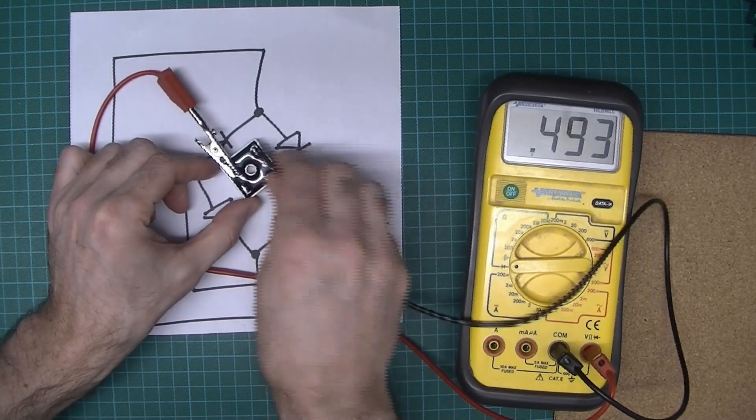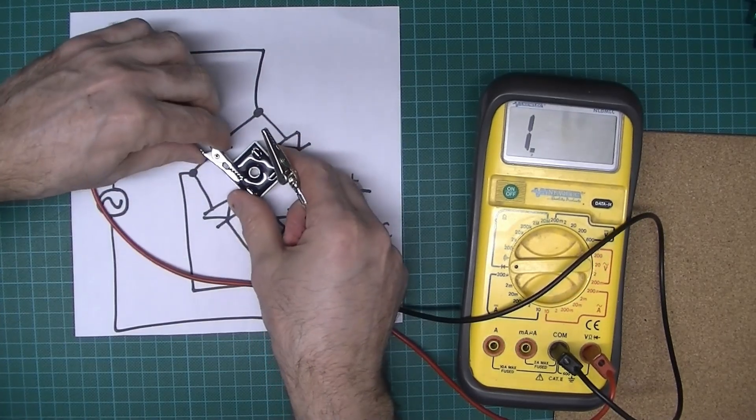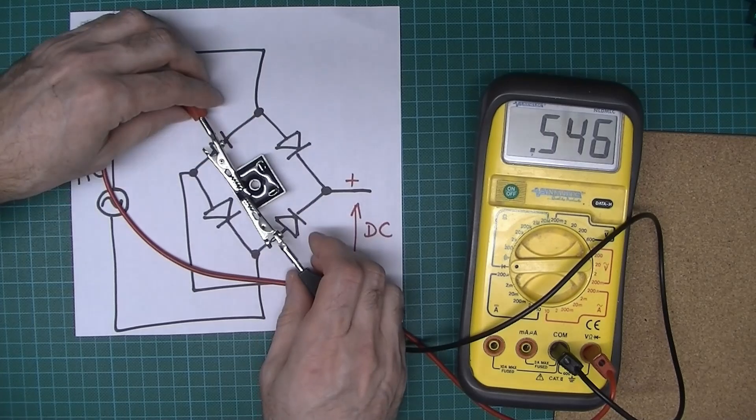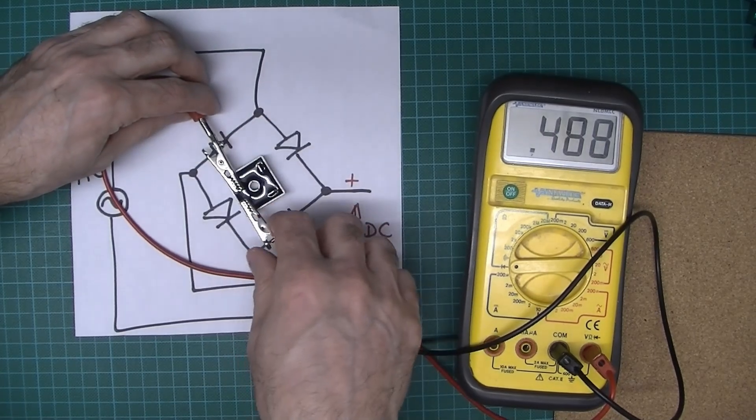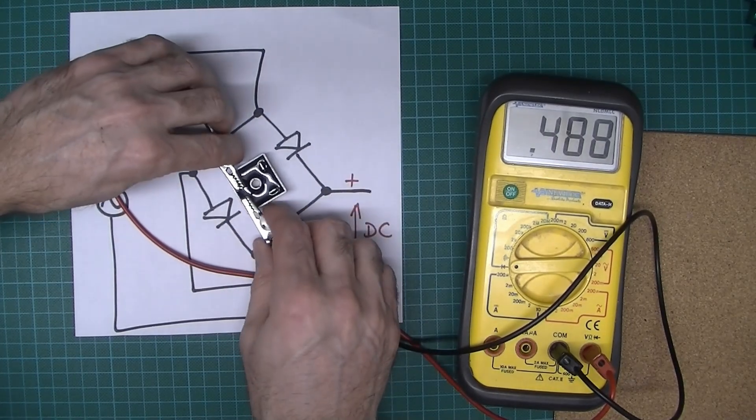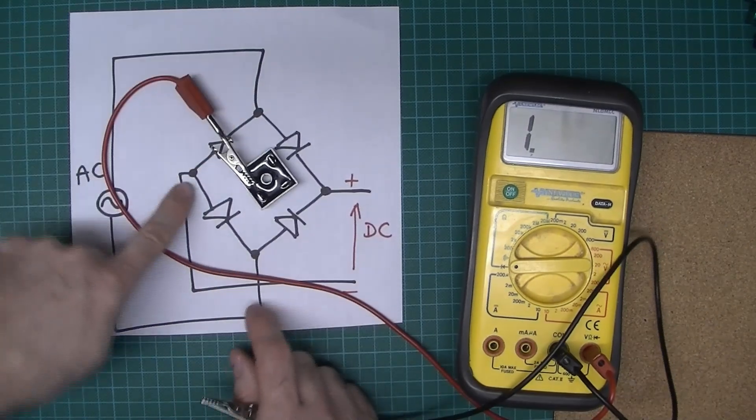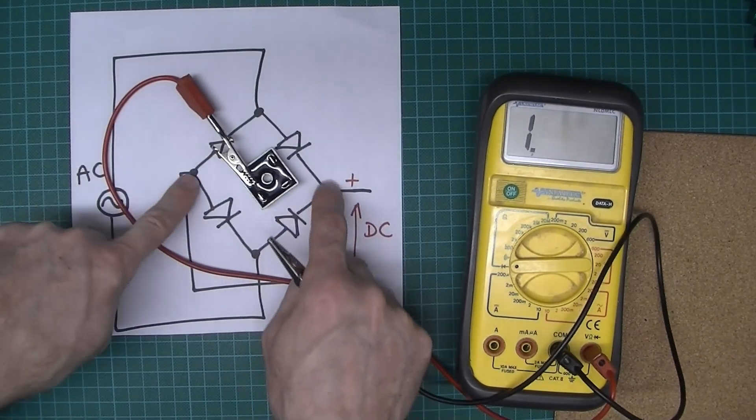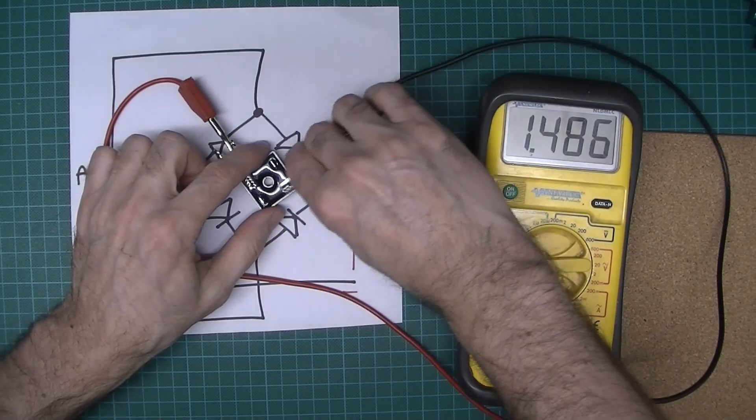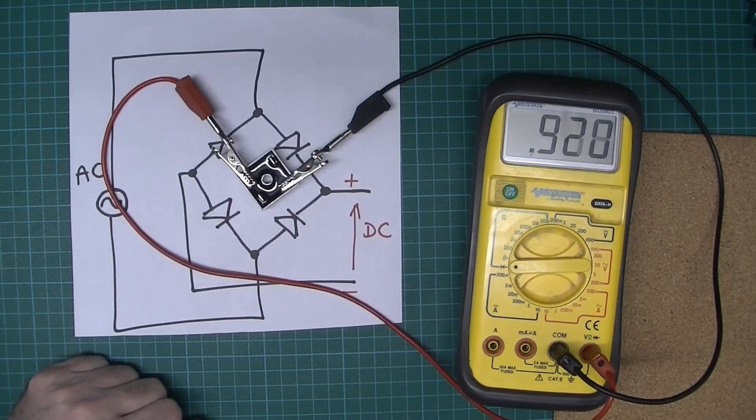And then we could test that one. So sure enough, that one works. And once again you test that one in reverse. So you work all your way around, and you can do them in reverse as well just to confirm. You could even, if you wanted to, go from here to here, so you'd be expecting about one volt. And sure enough, that works.